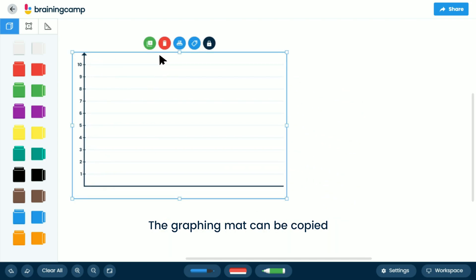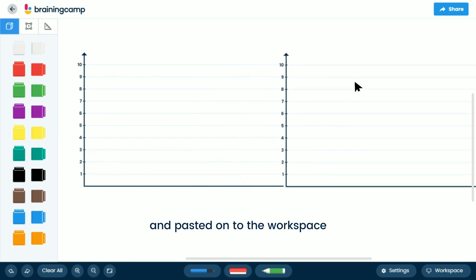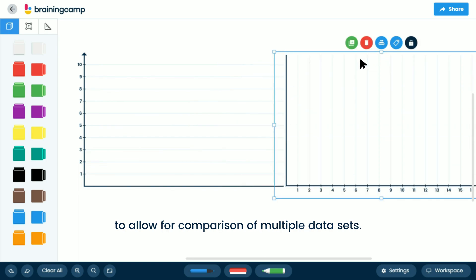The graphing mat can be copied and pasted onto the workspace to allow for comparison of multiple data sets.